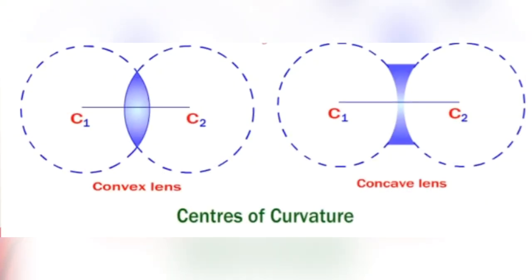Now let's look at some terms related to lens. A lens has two surfaces, and each surface is a part of a sphere. The center of the sphere whose part is the lens surface is called the center of curvature of that surface. Since a lens has two spherical surfaces, there are two centers of curvature, represented by the letter C. The radius of the sphere whose part is the lens surface is called the radius of curvature of the lens.